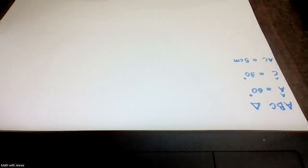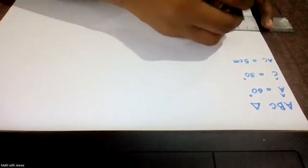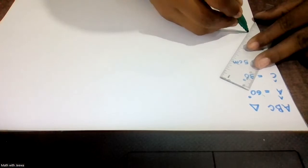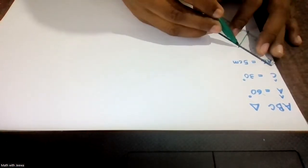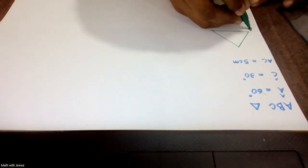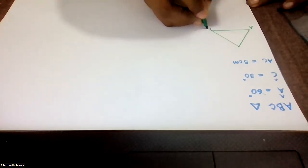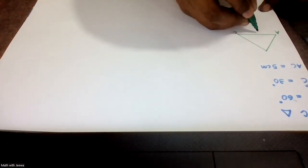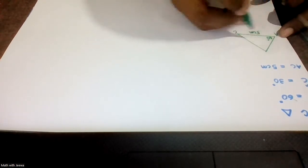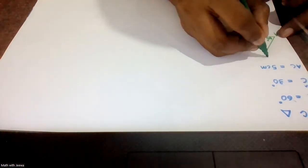First, draw a rough sketch. When you draw the rough sketch, you can do it without a ruler. Mark all the information: the side AC is available, so take AC for the base — it's easier to construct the rest of the triangle. Write 5 cm on AC, 60 degrees at angle A, and 30 degrees at angle C.